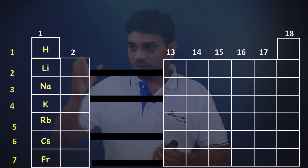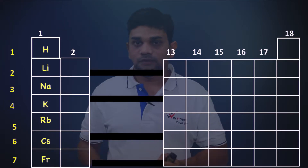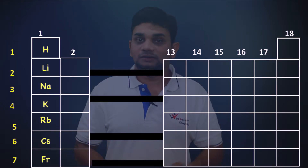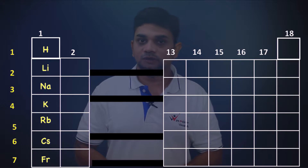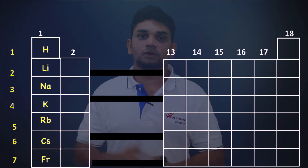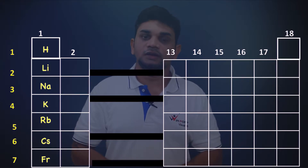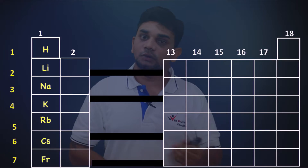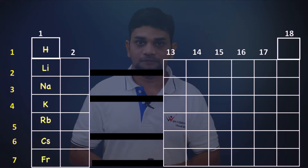The valency of sodium is one. So down the group, valency does not change — it remains the same because all elements in a group have the same number of electrons in the valence shell.